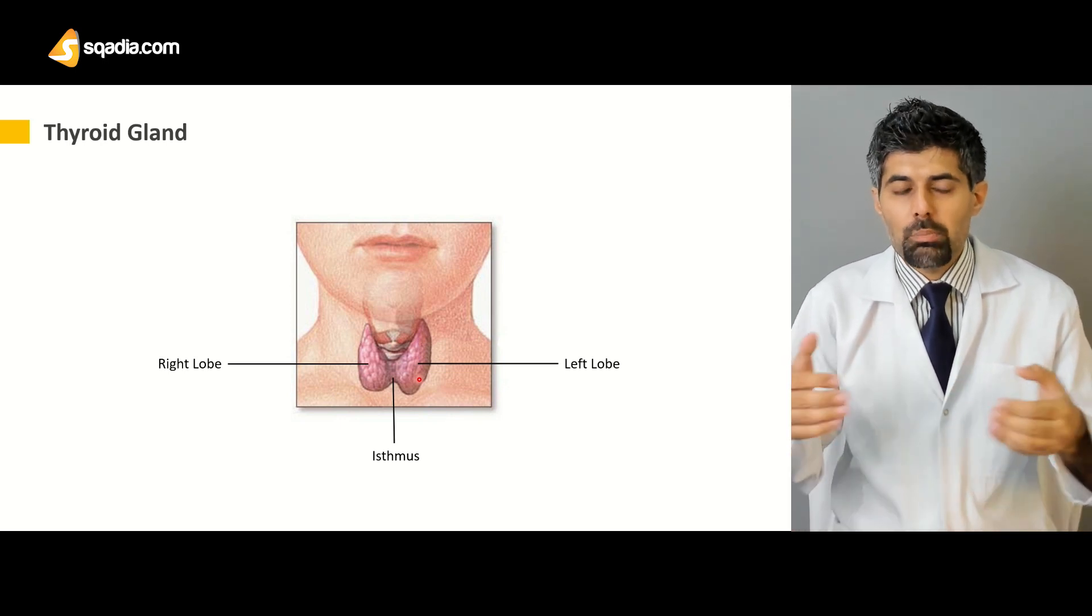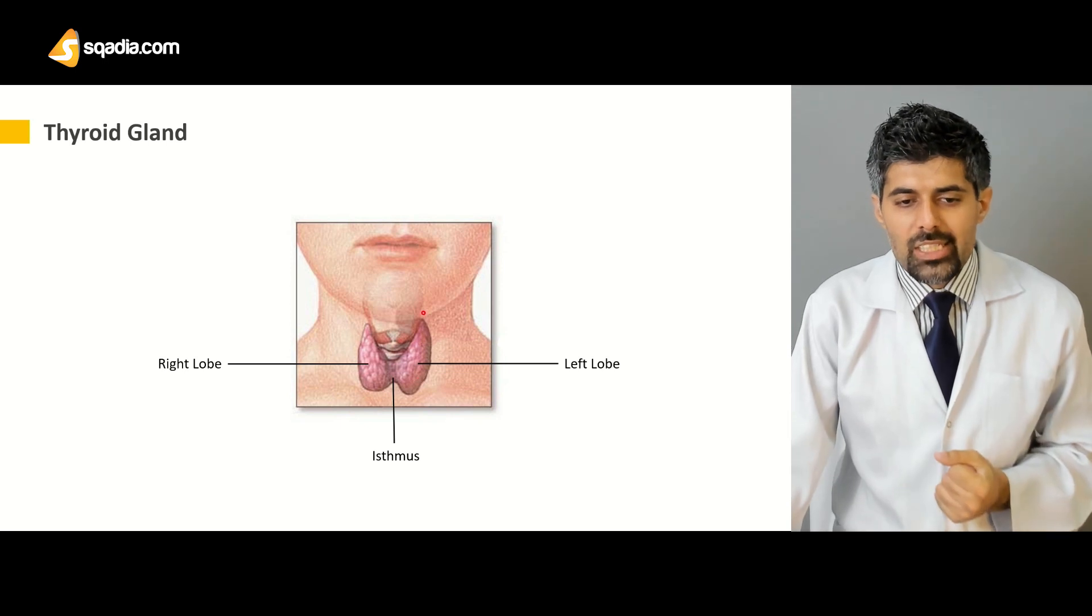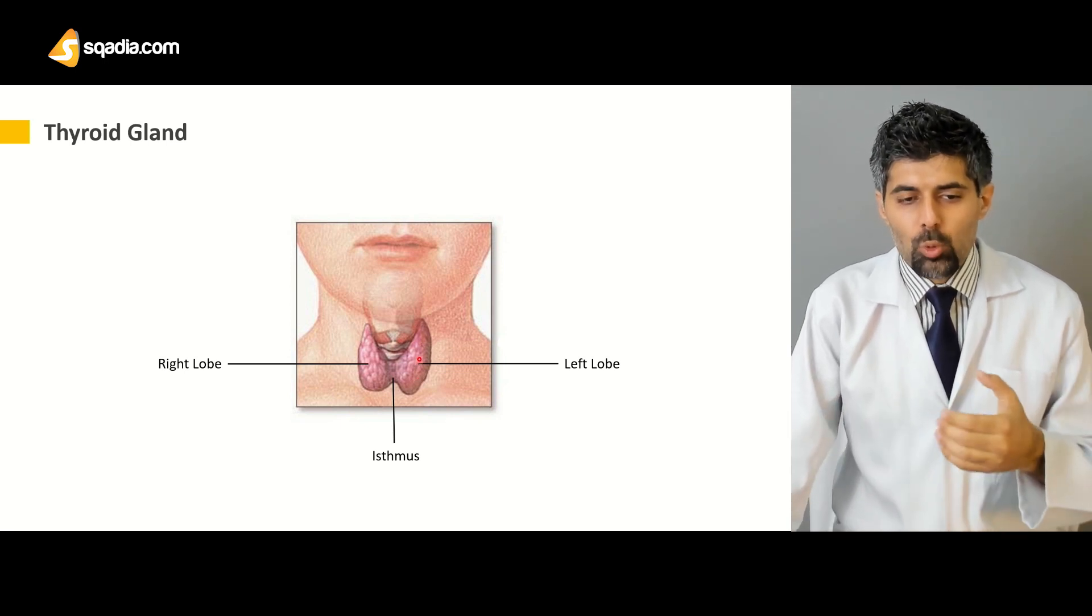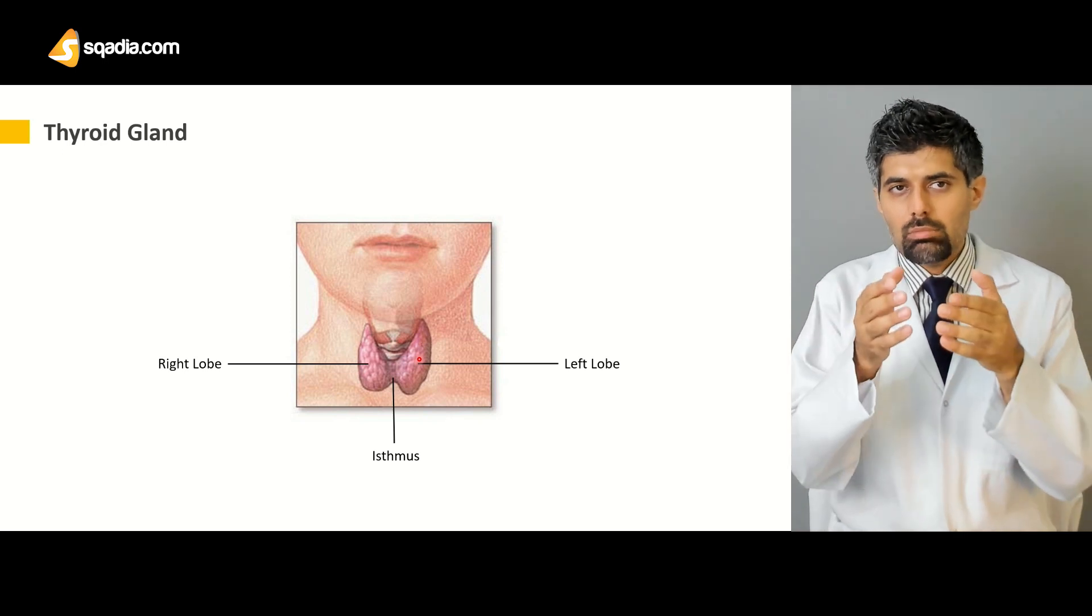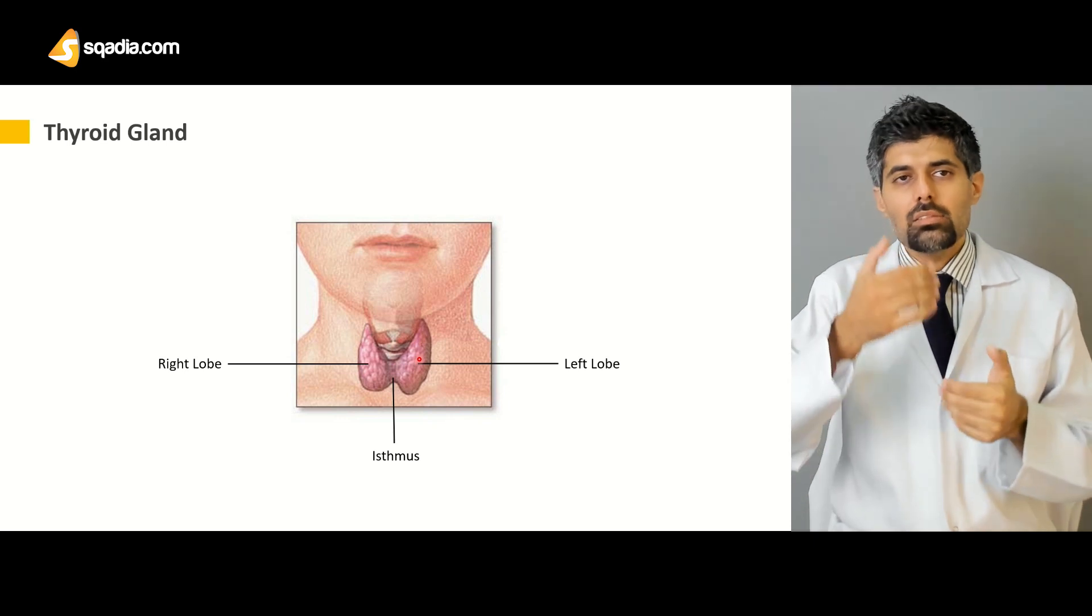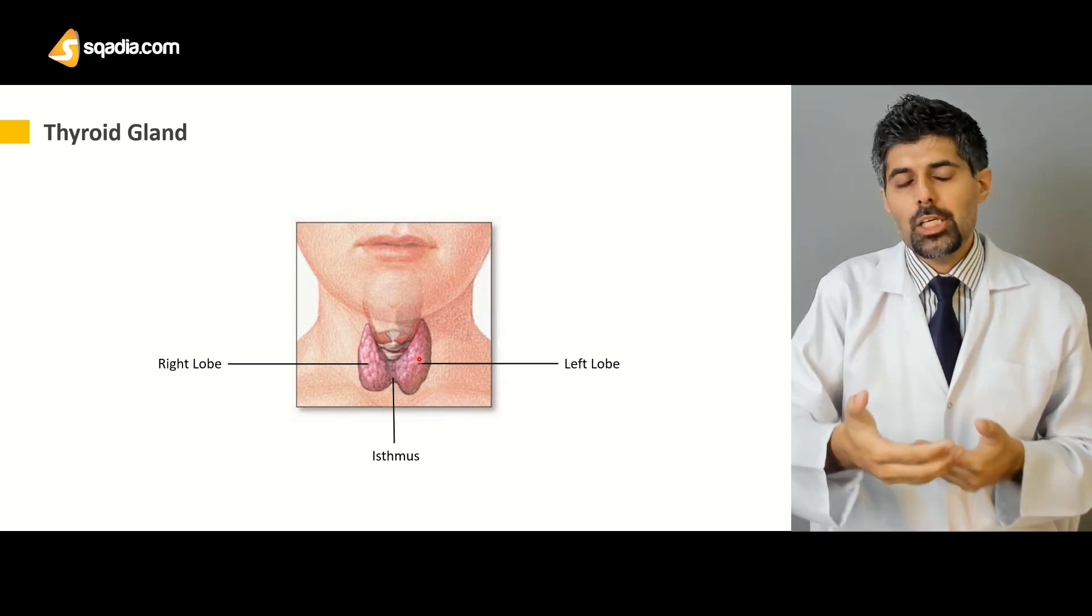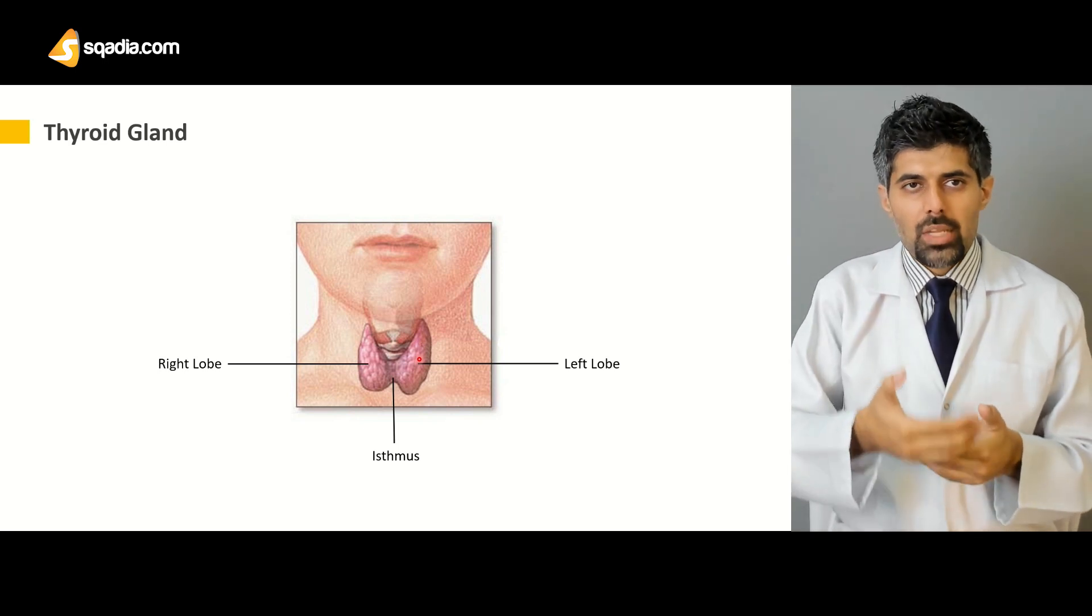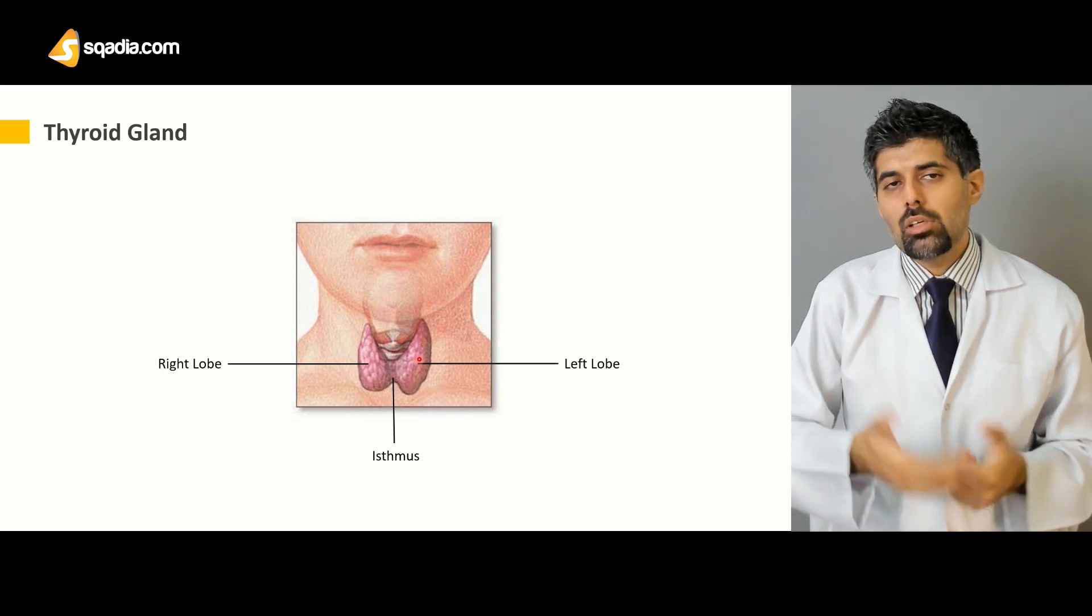These lobes lie both anteriorly and laterally in the neck. As they move downward, they lie anteriorly to the trachea, and as we go upward, they lie anteriorly to the laryngeal cartilages, that is the thyroid cartilage and the cricoid cartilage.